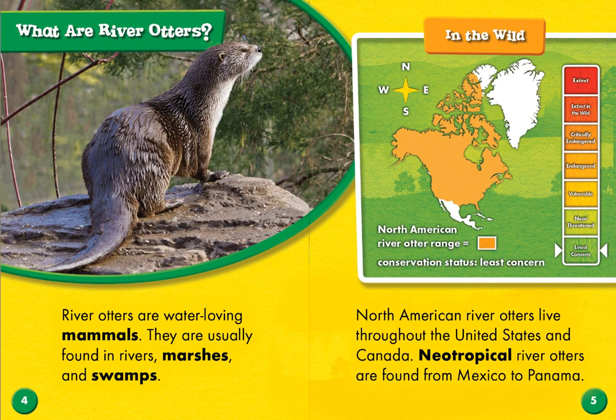What are river otters? River otters are water-loving mammals that are usually found in rivers, marshes, and swamps. North American river otters live throughout the United States and Canada. Neotropical river otters are found from Mexico to Panama. The kind that we have here in Utah are North American river otters. But if you go down south into Mexico and find otters in the river, they would be neotropical river otters.